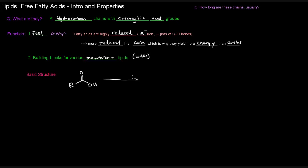Now this thing is an acid, right? And specifically, this hydrogen here is the acidic hydrogen, which means that if this fatty acid acts as an acid and gives up its proton, it will exist in this conjugate base form and give this carboxylate ion. Of course, the H+ would be out there. Now, typically at biological pHs, this is what we'd see — the carboxylate form.